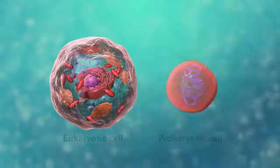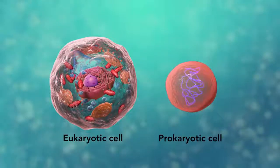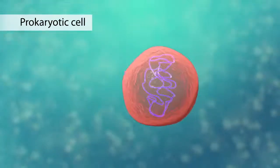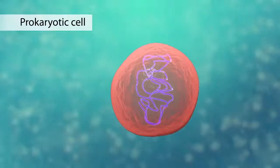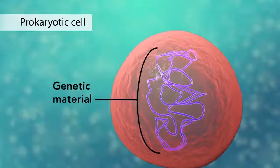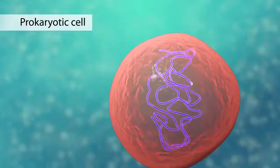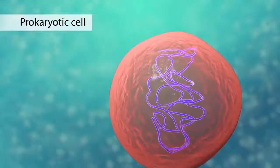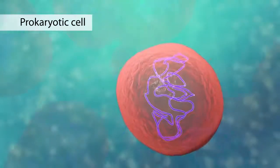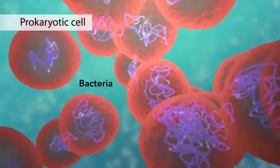The second category is prokaryotic cells. They don't have a nucleus or membrane-enclosed organelles. They do have genetic material, but it's not contained within a nucleus. Prokaryotic cells are always one-celled or unicellular organisms, such as bacteria.